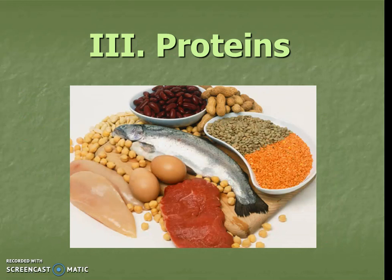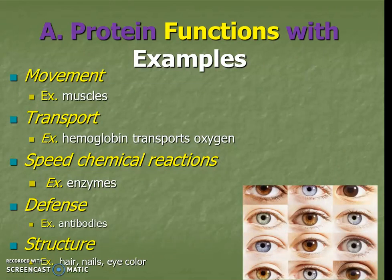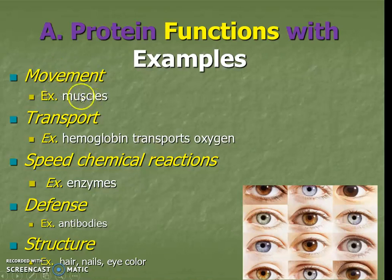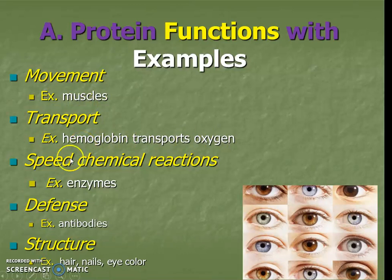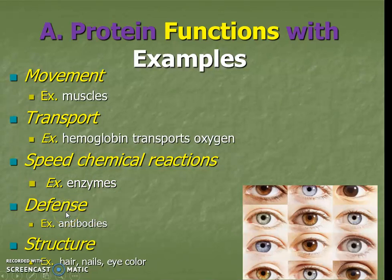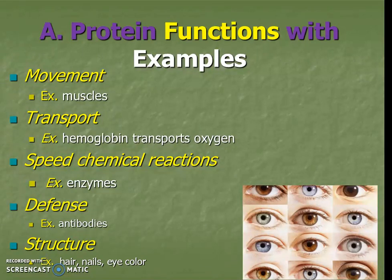Next one: proteins. Proteins have a lot of different functions. They're involved with movement, like our muscles — if we're eating something like a steak, that's actually mostly the muscle of an animal. Transport: they help move things like oxygen, and the protein hemoglobin does that. Speeding up chemical reactions is done by a special type called an enzyme, which is a protein. Defense, like keeping us healthy, is done by antibodies. Structure, like our hair and nails — those are actually proteins.